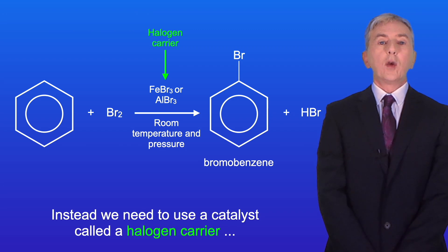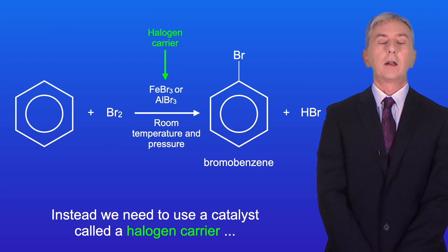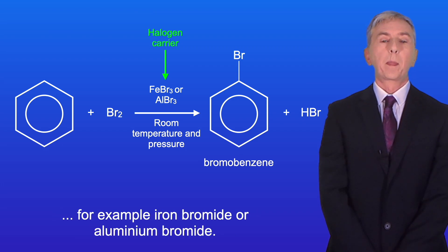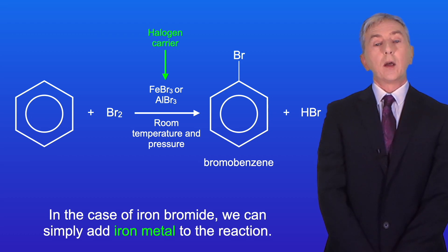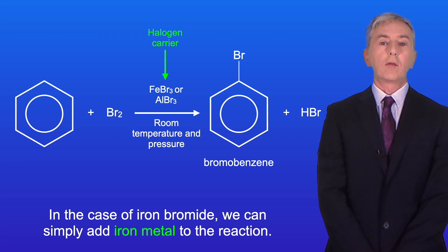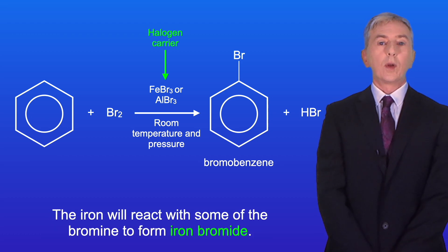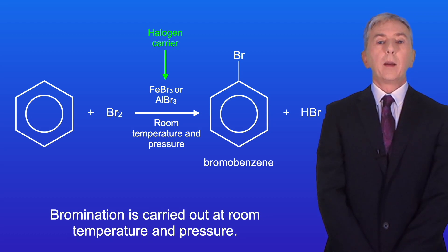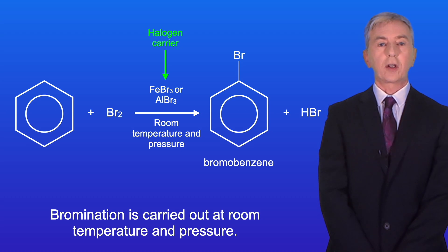Instead we need to use a catalyst called a halogen carrier — for example iron bromide or aluminium bromide. In the case of iron bromide, we can simply add iron metal to the reaction; the iron will react with some of the bromine to form iron bromide. Bromination is carried out at room temperature and pressure.